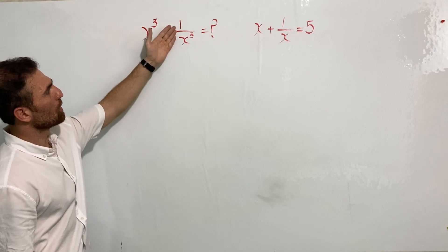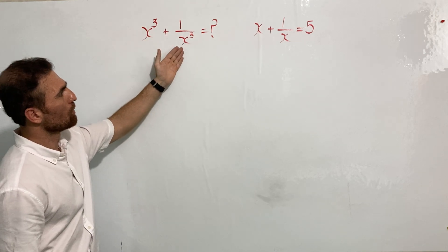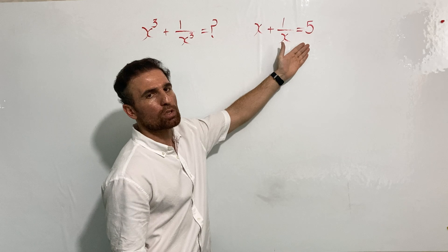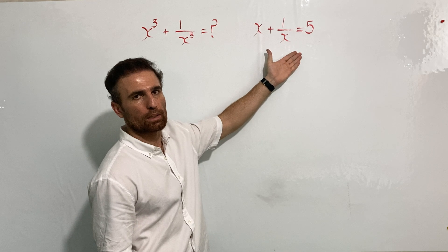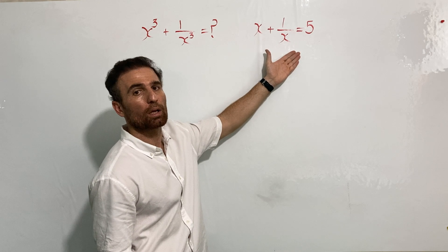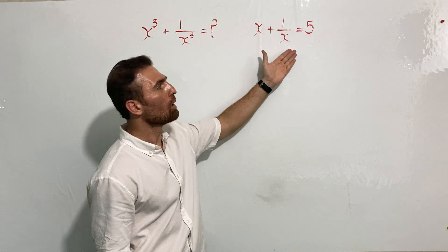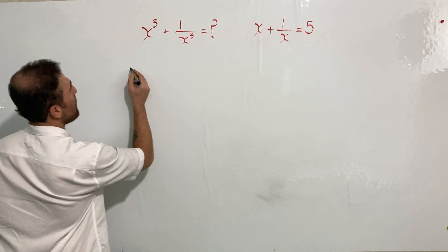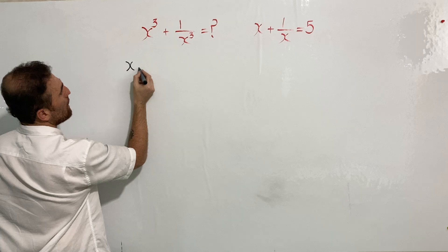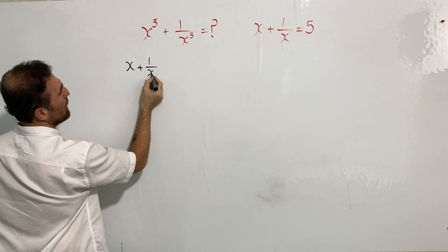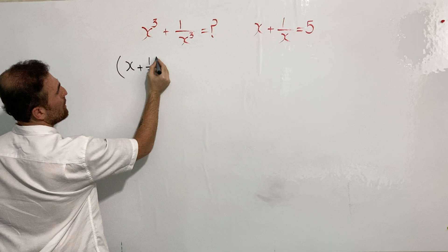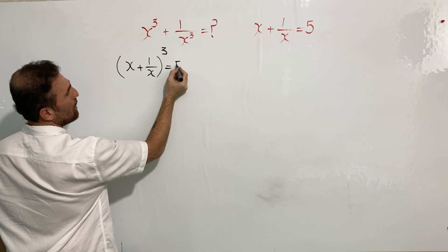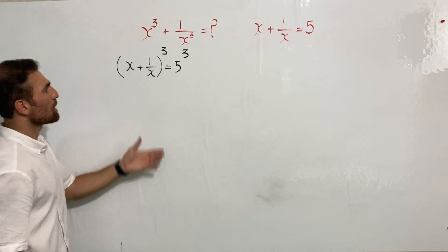Find the value of x cube plus one over x cube, where x plus one over x equals five. To solve this question, I'm going to start with the given information and raise both sides to the power of three, so it's going to be x plus one over x, cubed on the left side, and five cubed on the right side.